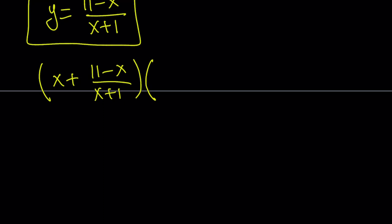That is multiplied by xy plus 1. When you multiply y by x, you get 11x minus x squared divided by x plus 1. You only multiply the numerator. And, of course, this plus 1.